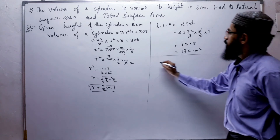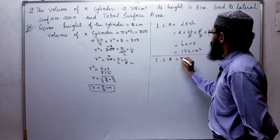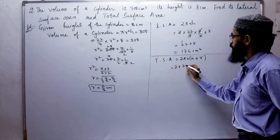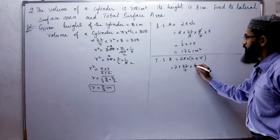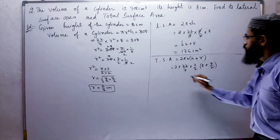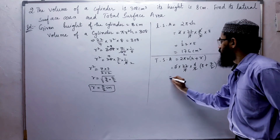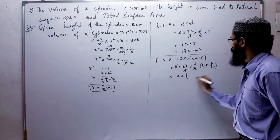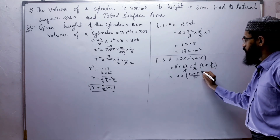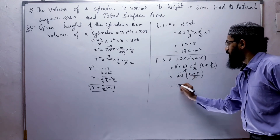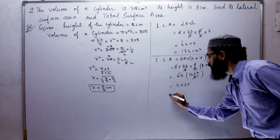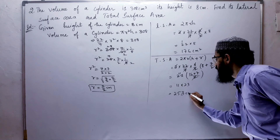Next, we have to find the total surface area. Total surface area equals 2πr(h + r). So, 2 × (22/7) × (7/2) × (8 + 7/2). The 2s and 7s cancel, giving 22 × (16/2 + 7/2) = 11 × (16 + 7) = 11 × 23 = 253 square centimeters.